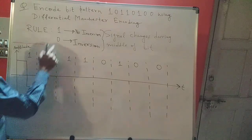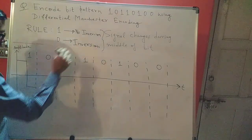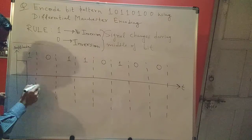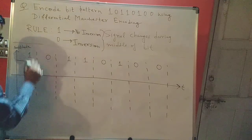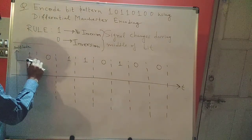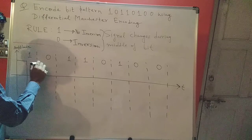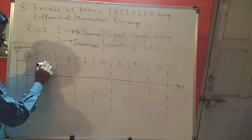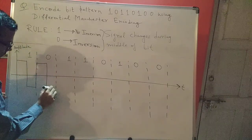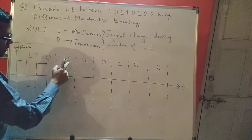Now zero represents inversion. So if I'm below the time axis I need to go up — I'll go up. After going up I'll proceed, and there's a change during the middle of the bit, so I'll do that. Here I am.